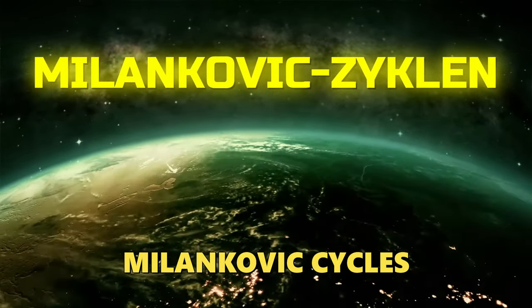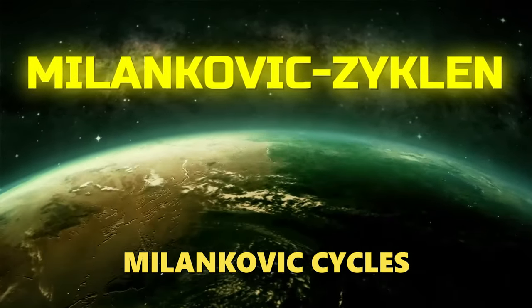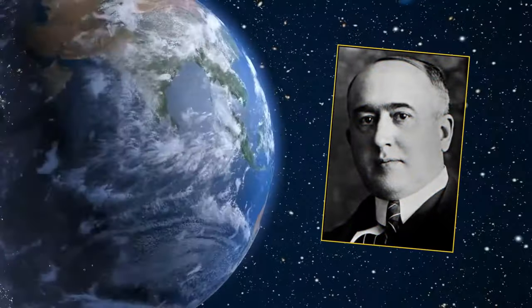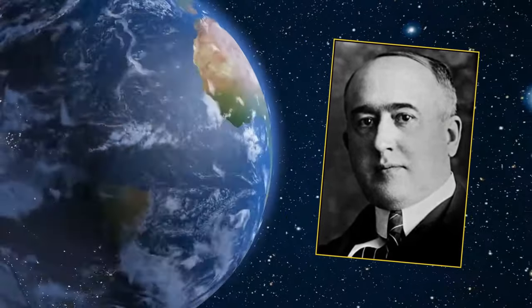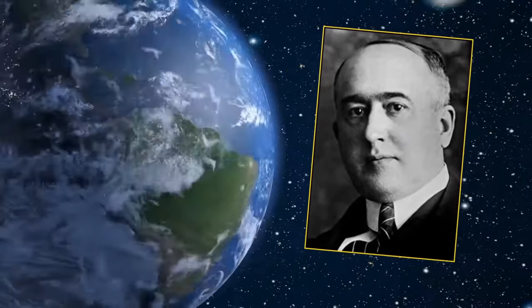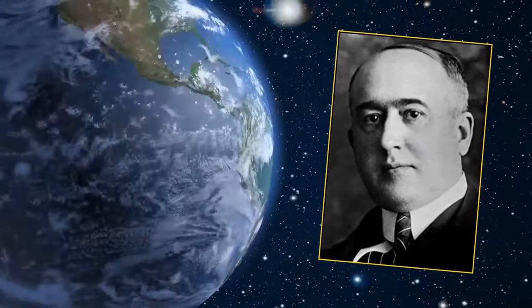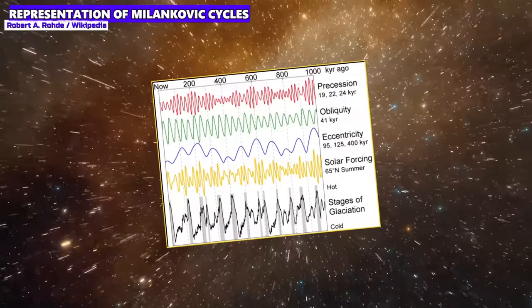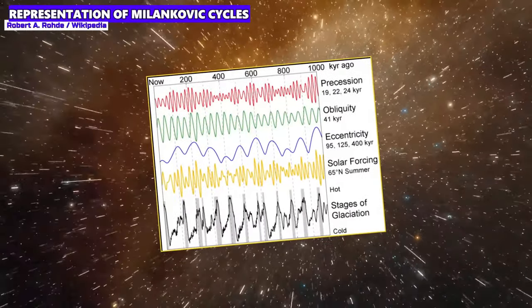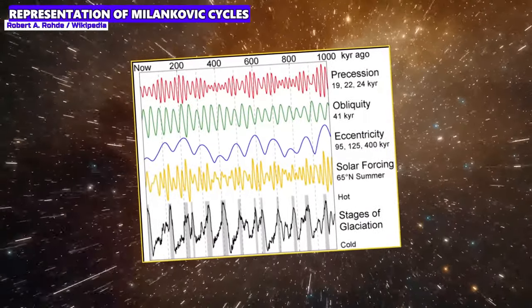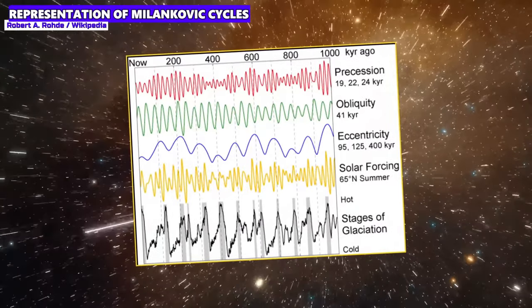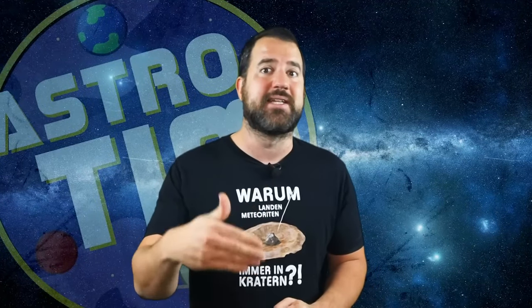The Serbian mathematician and geoscientist Milotin Milankovitch was the first to recognize this in the 1920s. So we are talking about several astronomical cycles that have a massive influence on our planet and the climate. And despite this immense importance, the average person has probably never heard of the Milankovitch cycles. But let's change that and take a look at the most important cycles.